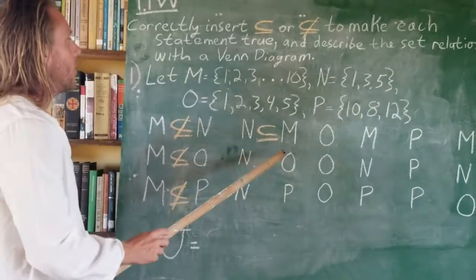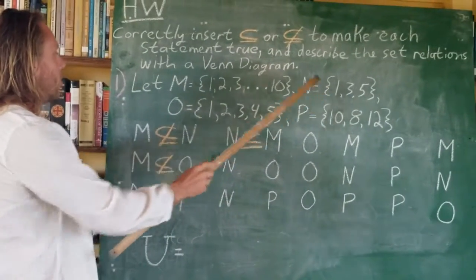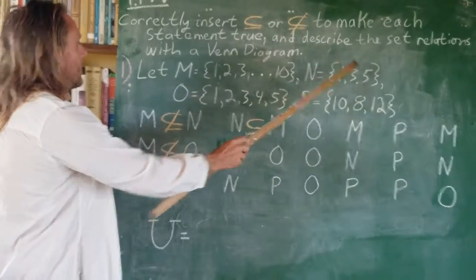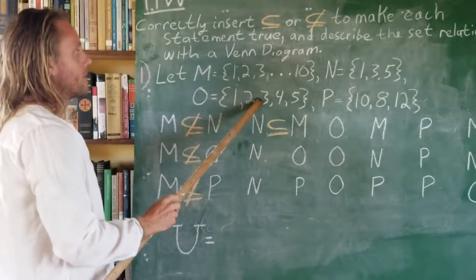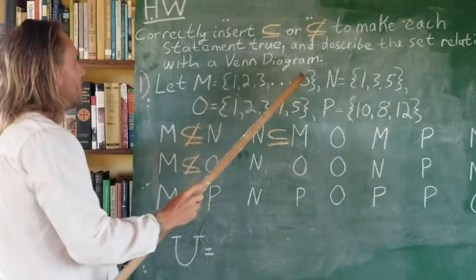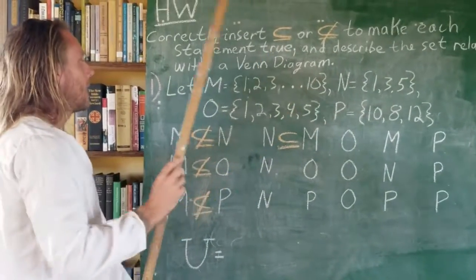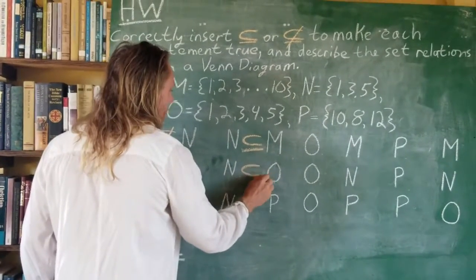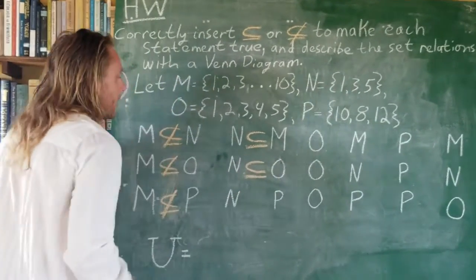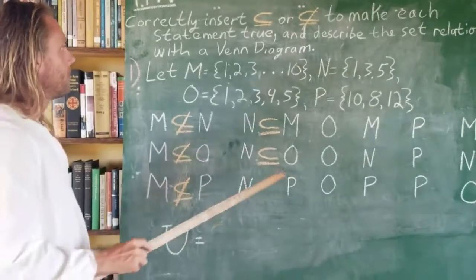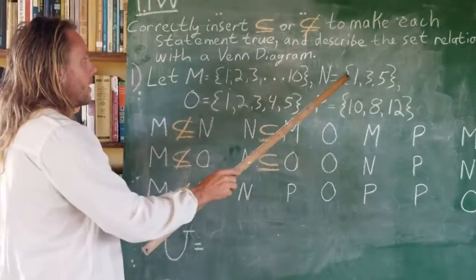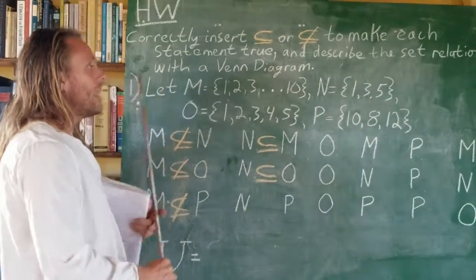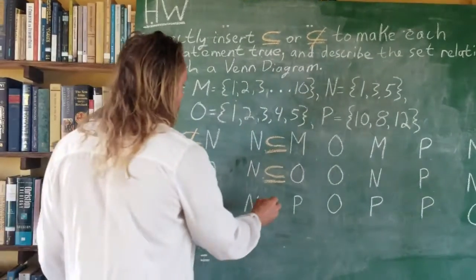How about N and O? N has a 1, O has a 1. N has a 3, O has a 3. N has a 5, O has a 5. Yes — N is also a subset of O. How about P? N has a 1, P does not. So N is not a subset of P.